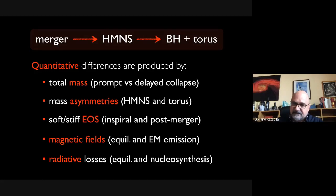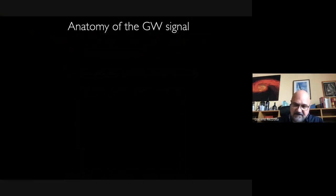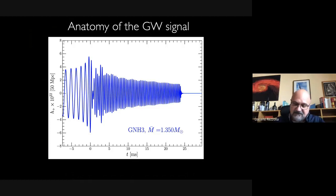Let me explain how you can understand the equation of state by looking at the gravitational waveform. When we do a simulation, the real quantity we want to provide our colleagues is the gravitational waveform. You have time on the x-axis in milliseconds and the gravitational wave strain in one of the two polarizations. There is one part of the signal called the chirp signal — the amplitude and frequency grow just like a bird chirping. Then there is a transient, and then there is the hypermassive neutron star phase, which is much easier to understand.